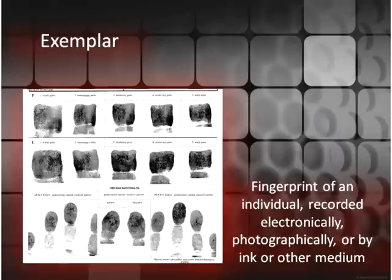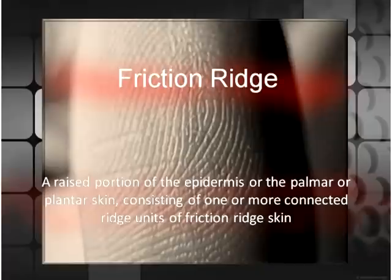Exemplar: a fingerprint of an individual recorded electronically, photographically, or by ink or other medium. Friction Ridge: a raised portion of the epidermis of the palmar or plantar skin consisting of one or more connected ridge units of friction ridge skin.